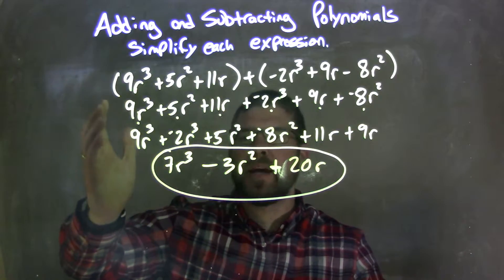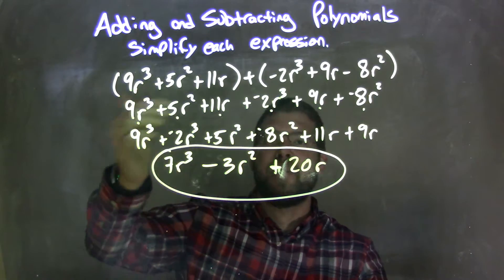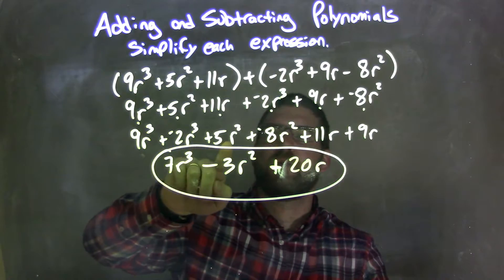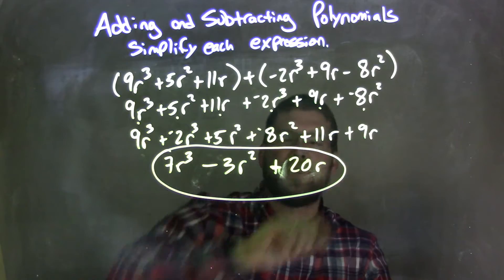And then I rearrange, having my like terms first, and then my highest degrees first. So we have 9r³ plus a negative 2r³ plus 5r² plus a negative 8r² plus 11r plus 9r.